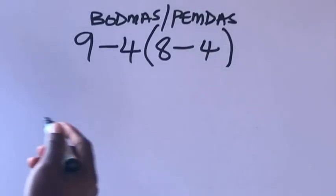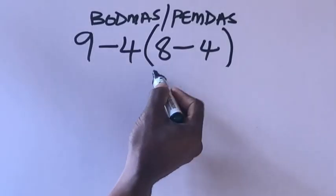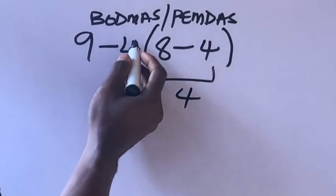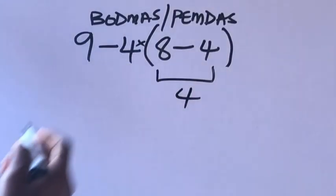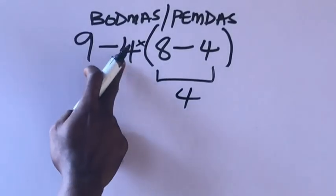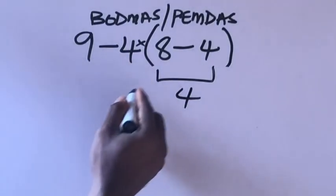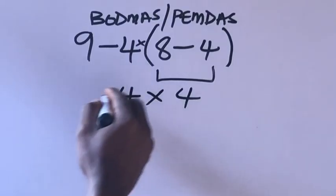Our answer will be 8 minus 4 will give us 4. Remember, there is an invisible multiplication here. Whenever a number is close to parenthesis, we have to multiply. So we put our times here. This is 4.